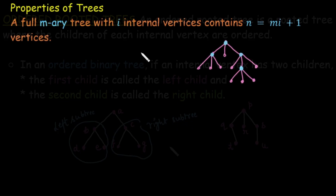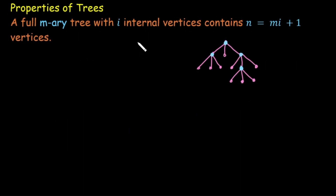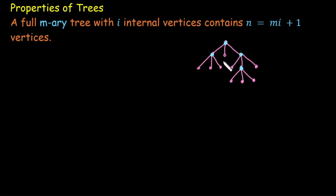Now we are moving towards the properties of trees. The first property: if we have a full m-ary tree with i internal vertices, it contains a total number of vertices given by a specific formula. Let's understand this through an example. Suppose we have a full 3-ary tree — that is, each internal vertex has exactly 3 children — and this tree has 4 internal vertices.